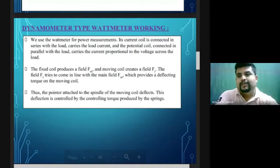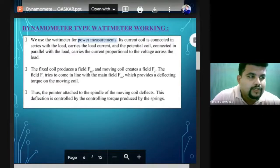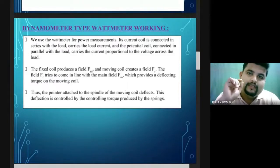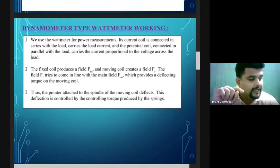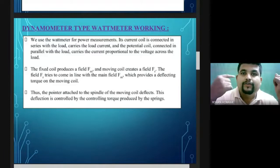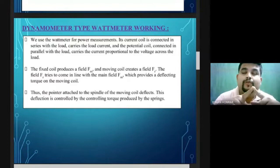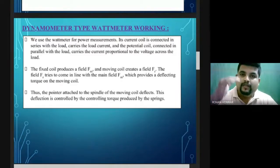For power measurement using the dynamometer type wattmeter: the current coil is connected in series with the load and carries the total load current. Since the current value is higher, the fixed coil has a larger diameter and fewer turns. So the fixed coil uses a thick wire for winding with a less number of turns.